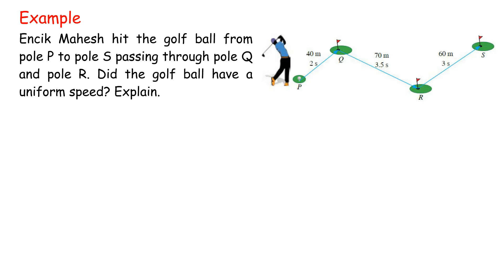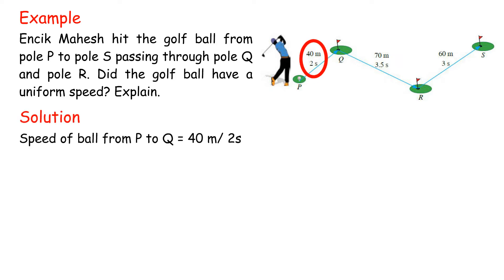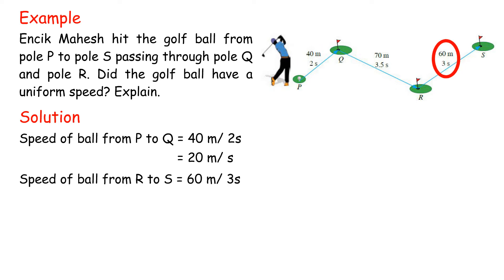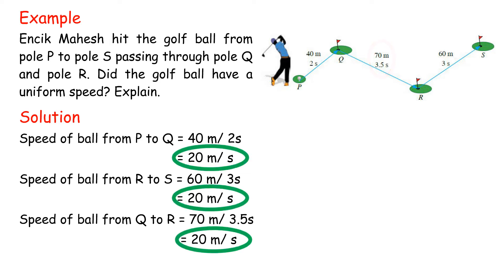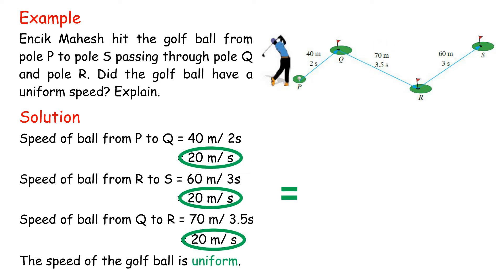Example: N-sigma hit the golf ball from pole P to pole S, passing through pole Q and pole R. Did the golf ball have a uniform speed? Explain. Solution: Speed of ball from P to Q equals 40 meters over 2 seconds, equals 20 meters per second. Speed of ball from R to S equals 60 meters over 3 seconds, equals 20 meters per second. Therefore, the speed of the golf ball is uniform.